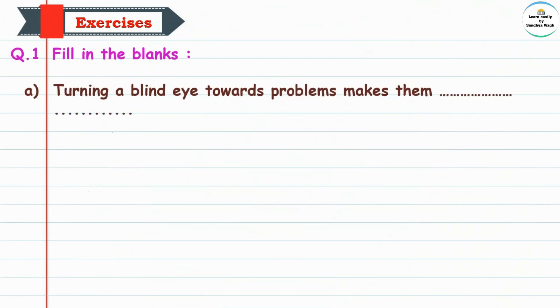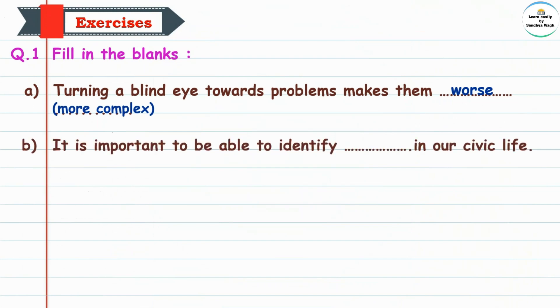Turning a blind eye towards problems makes them — 'turning a blind eye' means ignoring something, looking away as if you haven't seen it. So turning a blind eye towards problems makes them worse or more complex. It makes the problem very severe or complicated. It is important to be able to identify problems in civic life.